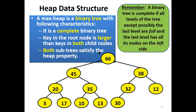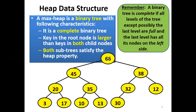For the max heap, the principle is that all elements at the root node must be greater than all children nodes. For example, 66 is greater than 45 and 38. In the sub-tree rooted at 38, 38 is greater than 32 and 12. This implies that even the children nodes or sub-roots must satisfy the heap property.